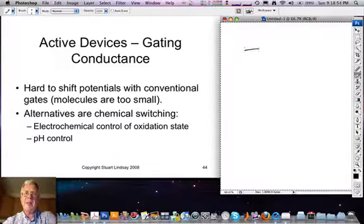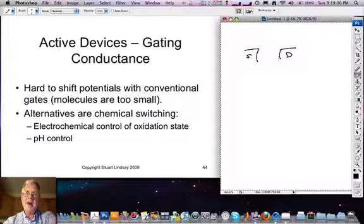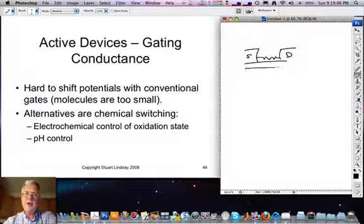Generally, a field effect transistor will have a construction something like this, where one has a source electrode, a drain electrode, and then, in this case, a molecule connecting the two. And finally, under a layer of insulator, a gate electrode.